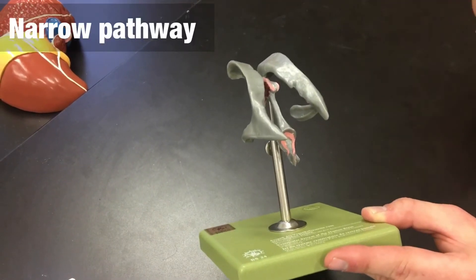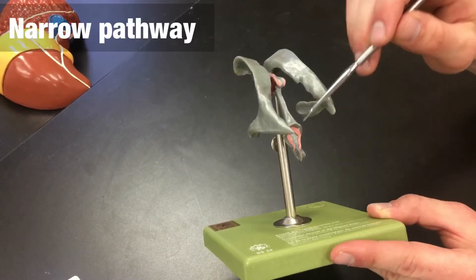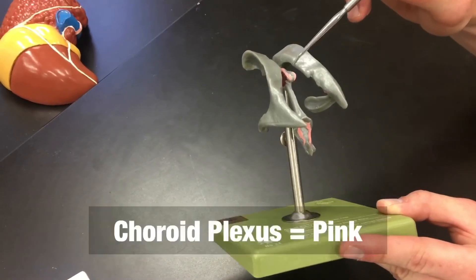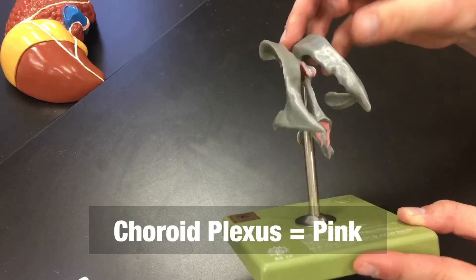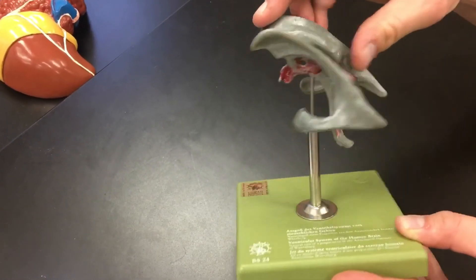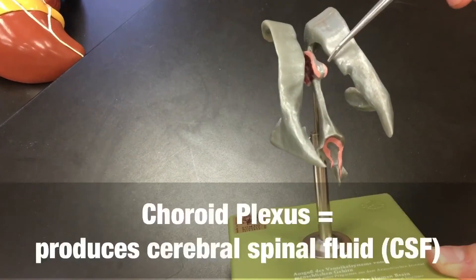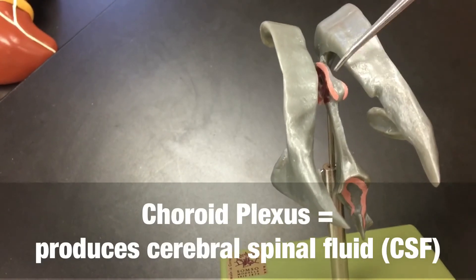The last thing to mention about this model is anything that's pink is representing the choroid plexus, which produces the cerebral spinal fluid.